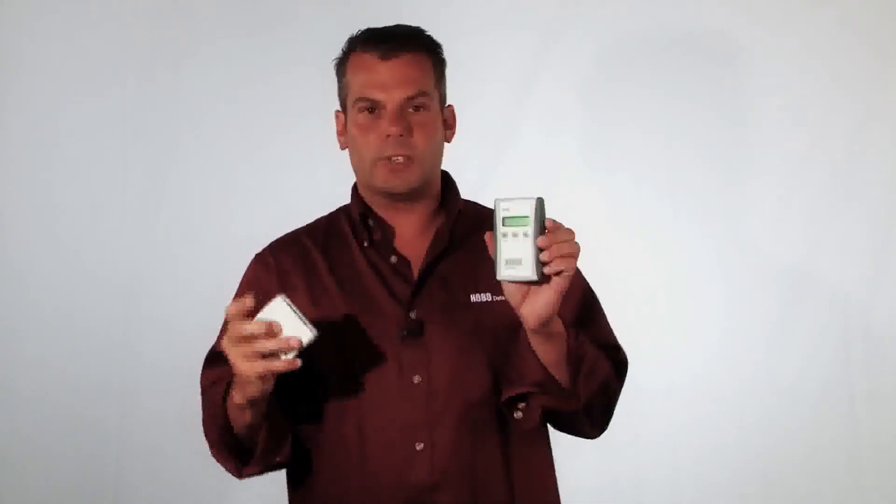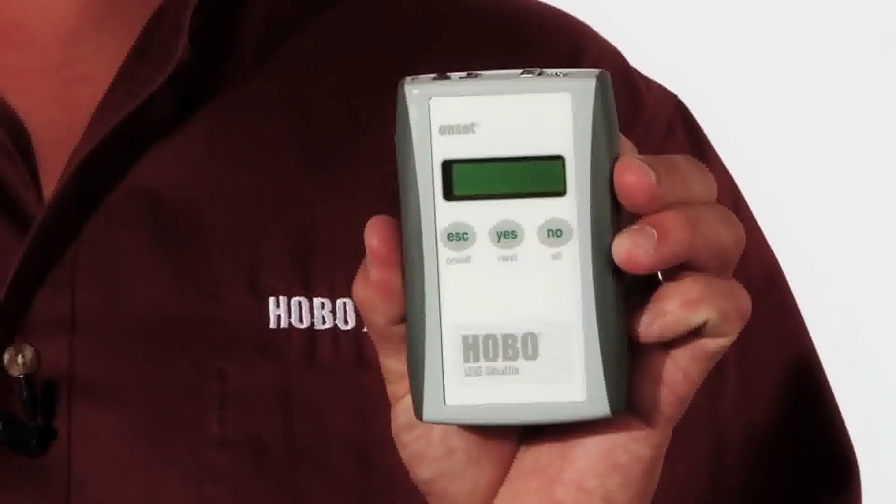With the USB port on the bottom, you can program the logger and download it to HoboWare Pro for Macintosh and Windows. It'll download in about 30 seconds. We also have what's called a data shuttle transporter, part number U-DT-1. This is something that you use to download and restart the logger in the field.